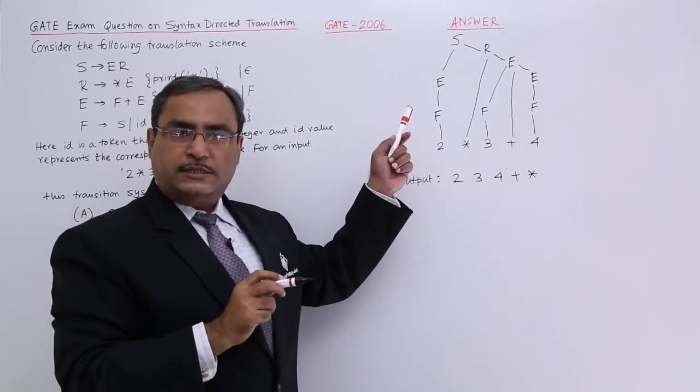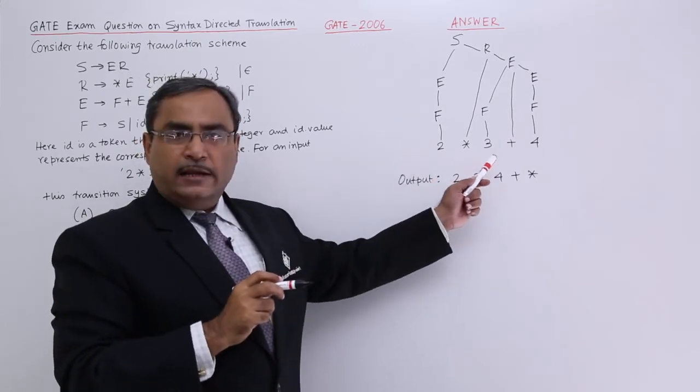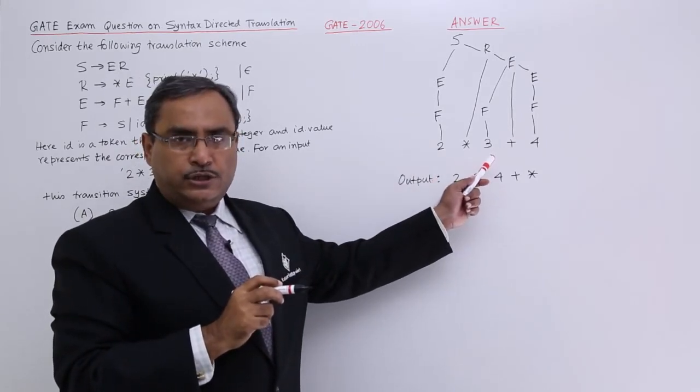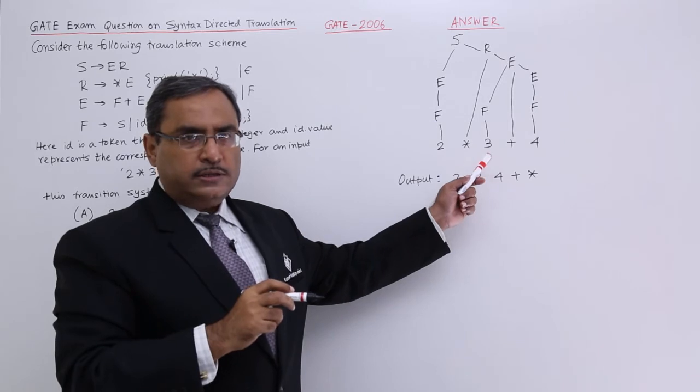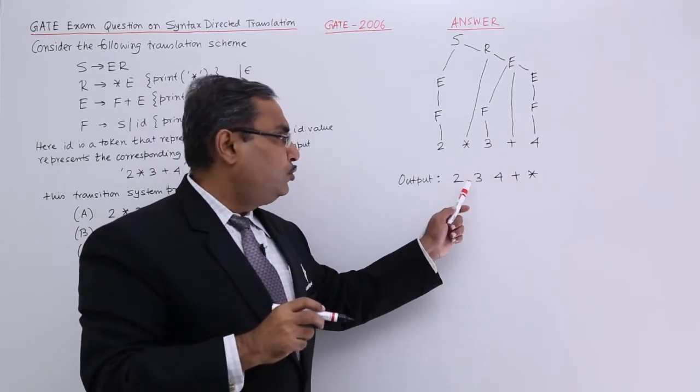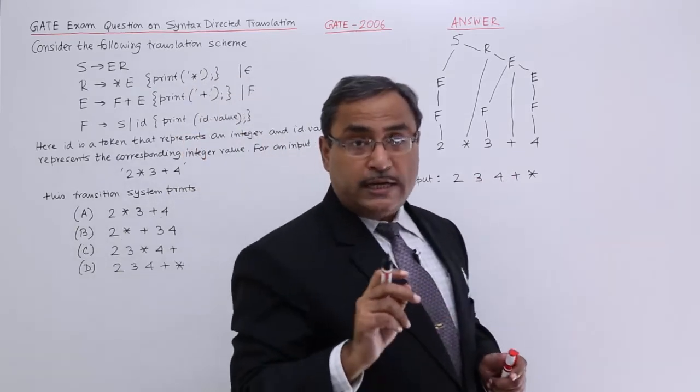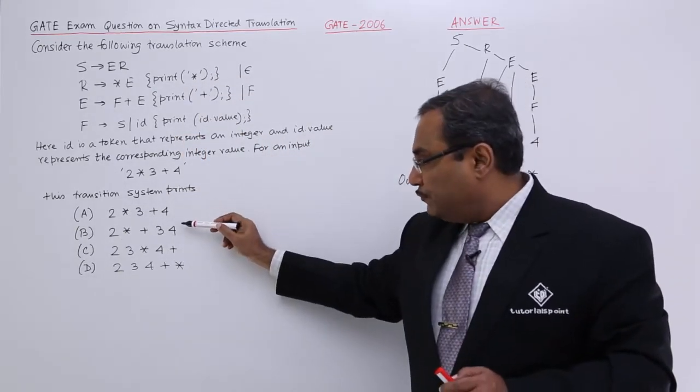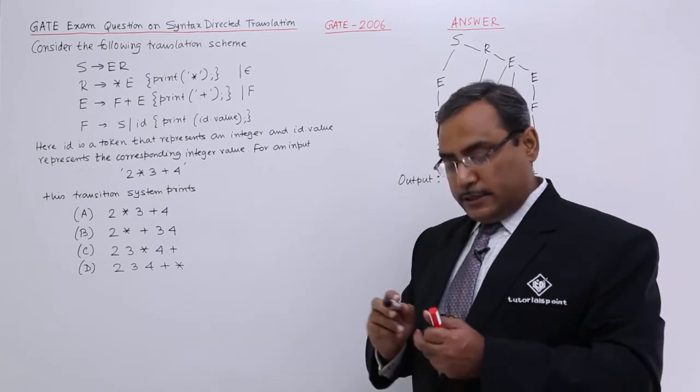I have constructed the parse tree successfully that means it is a valid sentence for the language of this particular grammar or syntax directed translation scheme and this is my output. What is that? 2, 3, 4 plus star. That is my output 2, 3, 4 plus star.